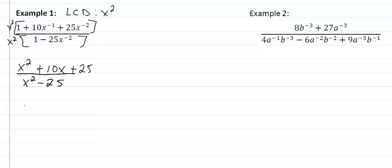The top is a perfect square trinomial. So we have x plus 5, x plus 5.